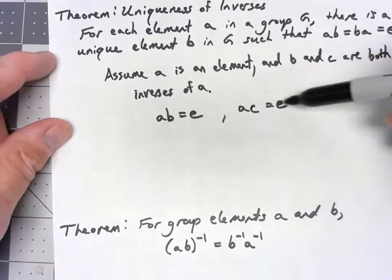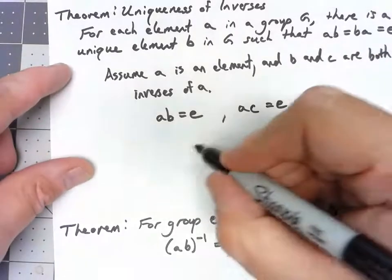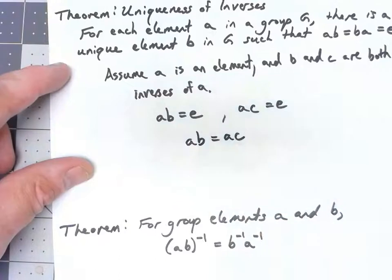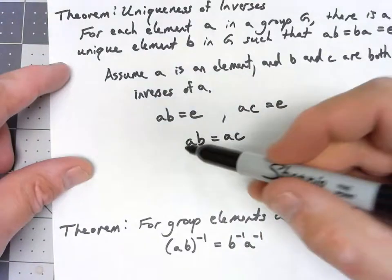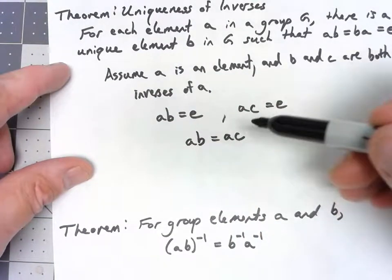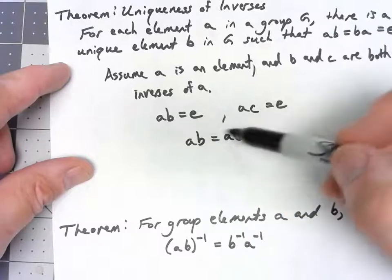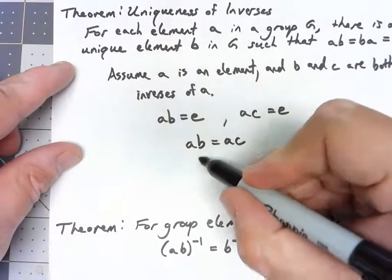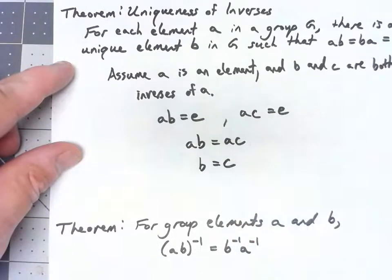But if those are both equal to the identity, they have to be equal to each other, and now we can use that left cancellation rule that we just proved. I have A times B equals A times C, B equals C.